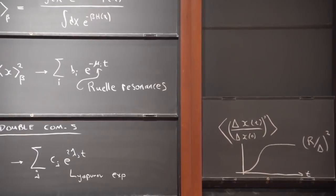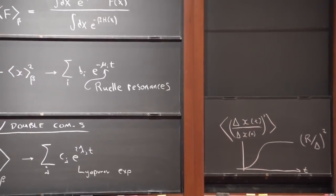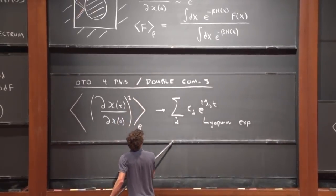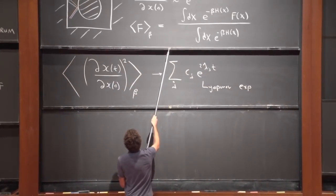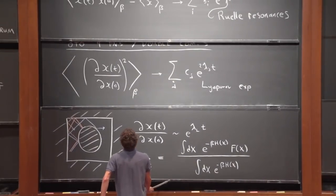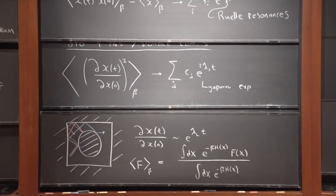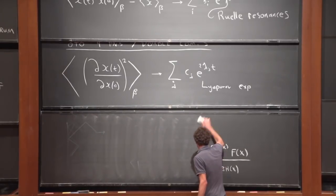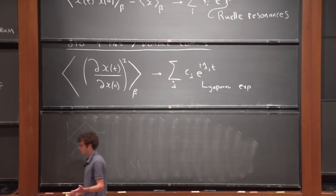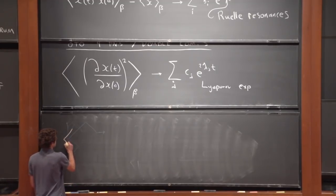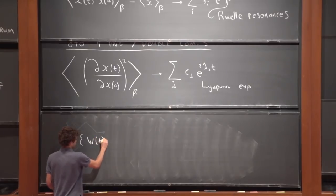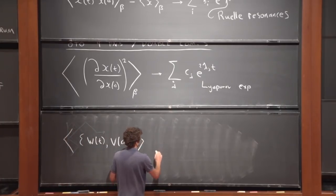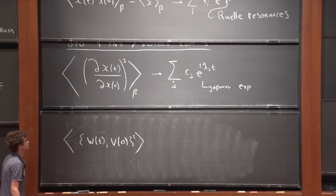We can rewrite this square of the derivative as a square of a Poisson bracket — specifically a Poisson bracket between x(t) and p(0). More generally, we expect exponential deviation of almost any quantity with respect to almost any perturbation, so Poisson brackets of general functions w(t) with respect to other general functions at earlier times are also expected to grow with the same spectrum of Lyapunov exponents.